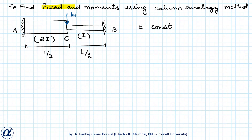In this question we want to find fixed end moments using the column analogy method. We are given a beam with ends A and B fixed. The second moment of area for the first half of the beam is 2I and for the second half is I. There is a concentrated load W acting at the mid-span of the beam.